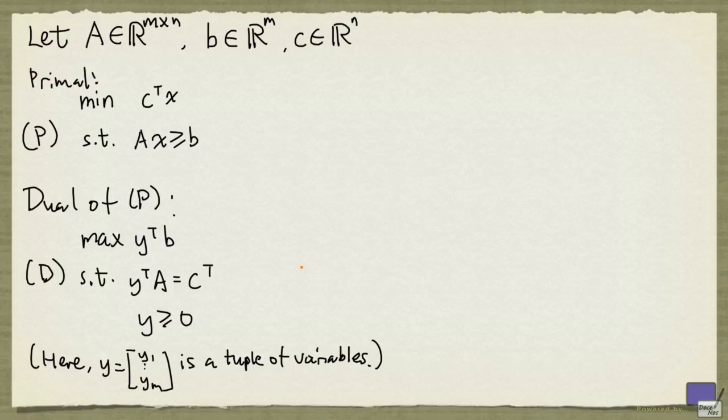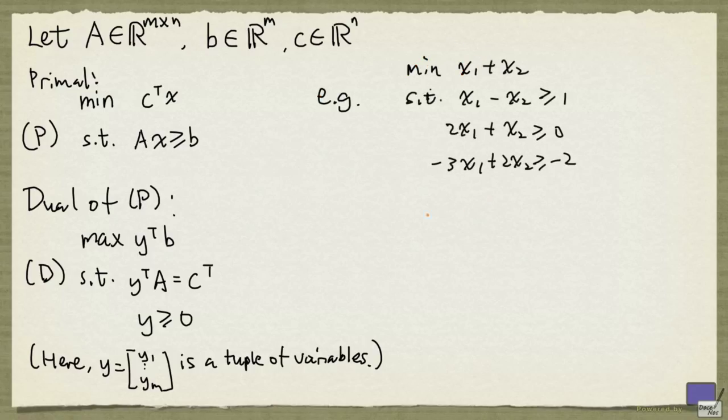And let's see an example. Suppose that my primal problem is the following. Then the dual problem is as follows. Notice that Y has m entries, and m in this case is 3, so we'll have y1, y2, y3, times the tuple B.